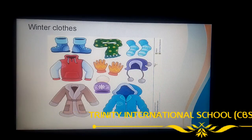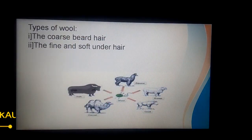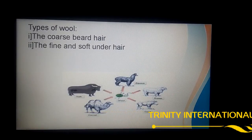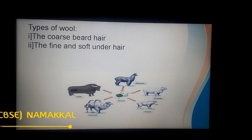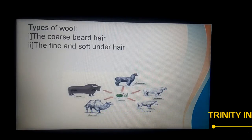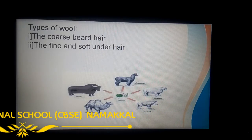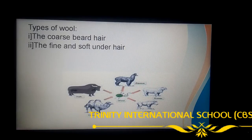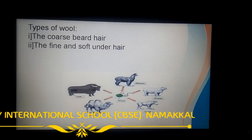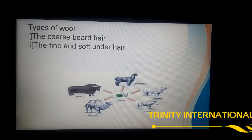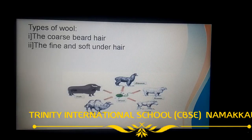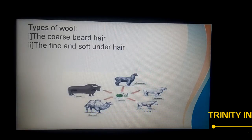We get two types of wool from wool-yielding animals. The first is coarse beard hair, which is rough and strong, used to make rugs, carpets, and blankets. The second is fine and soft under hair, which is found close to the skin and is mostly used to make clothes.